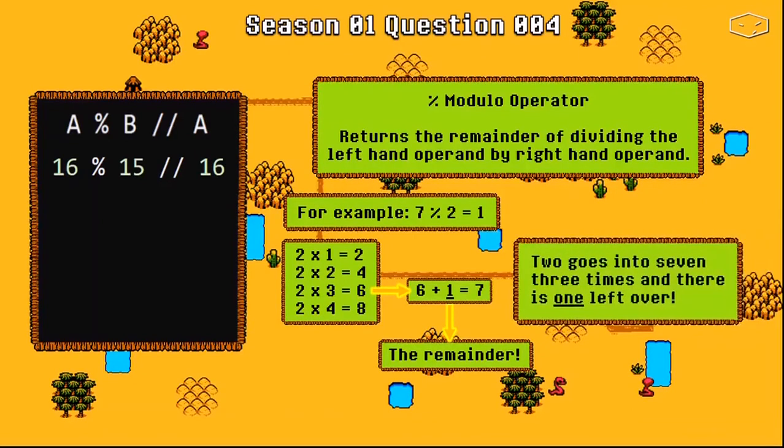In other words, the number 2 goes into 7 three times and there is 1 left over. For our specific example, 15 times 1 is 15, 15 times 2 is 30, so we choose 15 times 1. Then from 15 to 16 we just need the number 1.